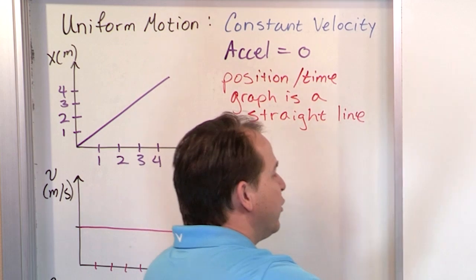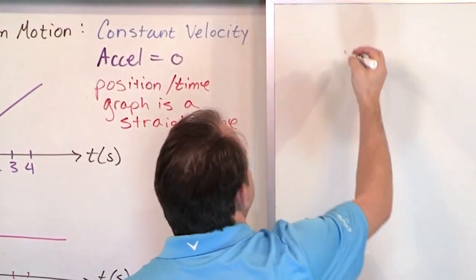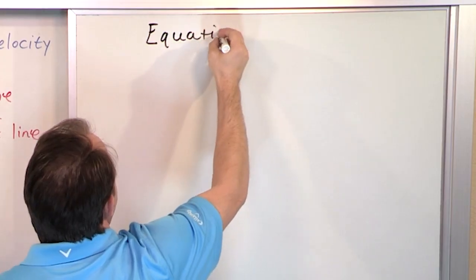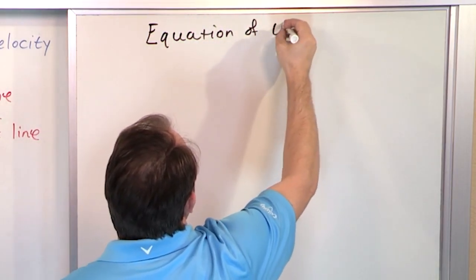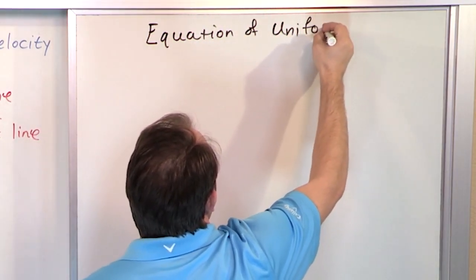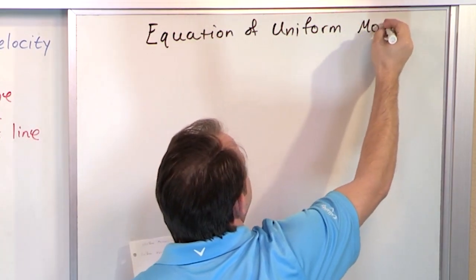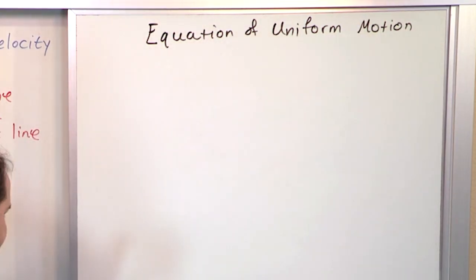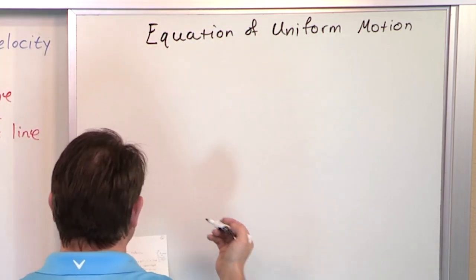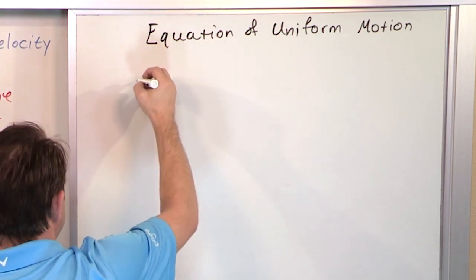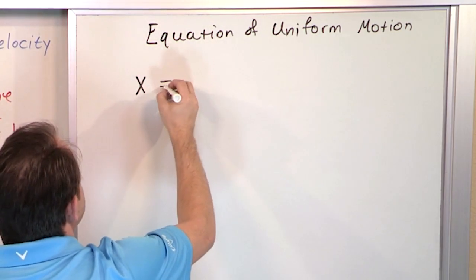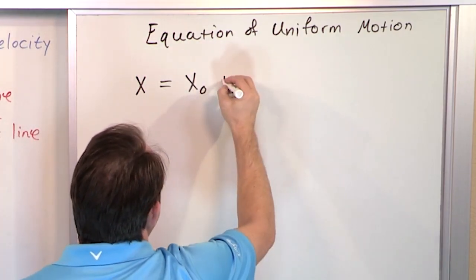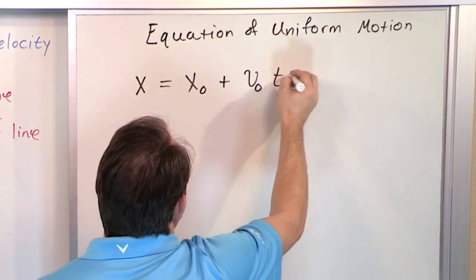So what is the equation of uniform motion? This is the first physics equation you've ever seen in this course. It might look a little scary, but I promise you it is not. The equation of uniform motion is: x equals x sub zero — you call it x naught — plus v naught t.